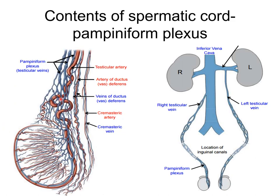The pampiniform plexus of veins is another important content of the Spermatic Cord. The veins emerging from the testis form the pampiniform plexus, which drains venous blood from the testis. This plexus ascends and at the superficial inguinal ring condenses to form four veins passing through the inguinal canal. At the level of the deep inguinal ring, these join to form two testicular veins. On the right side, the testicular vein drains into the inferior vena cava; on the left side, it drains into the left renal vein.